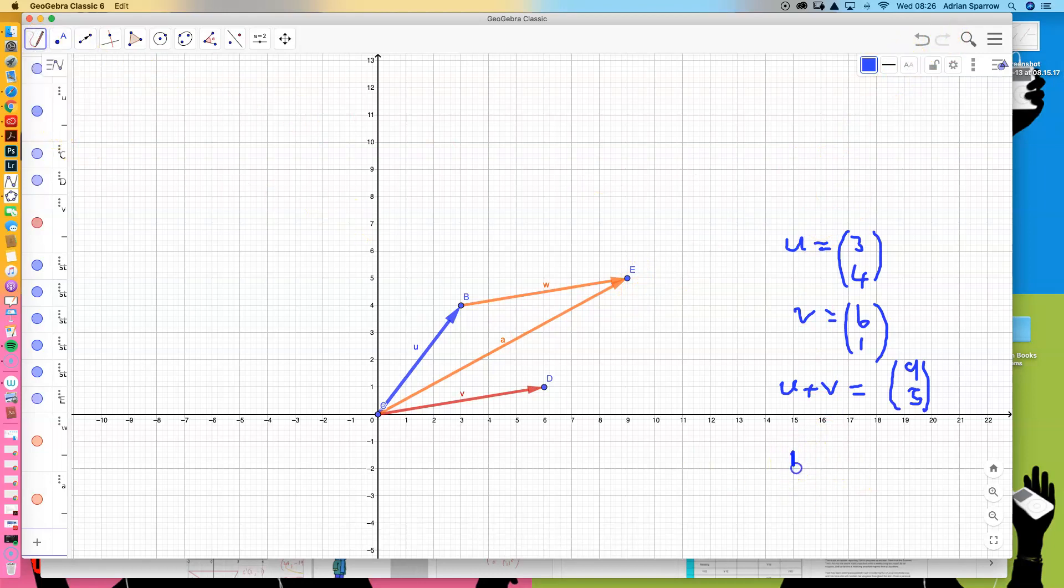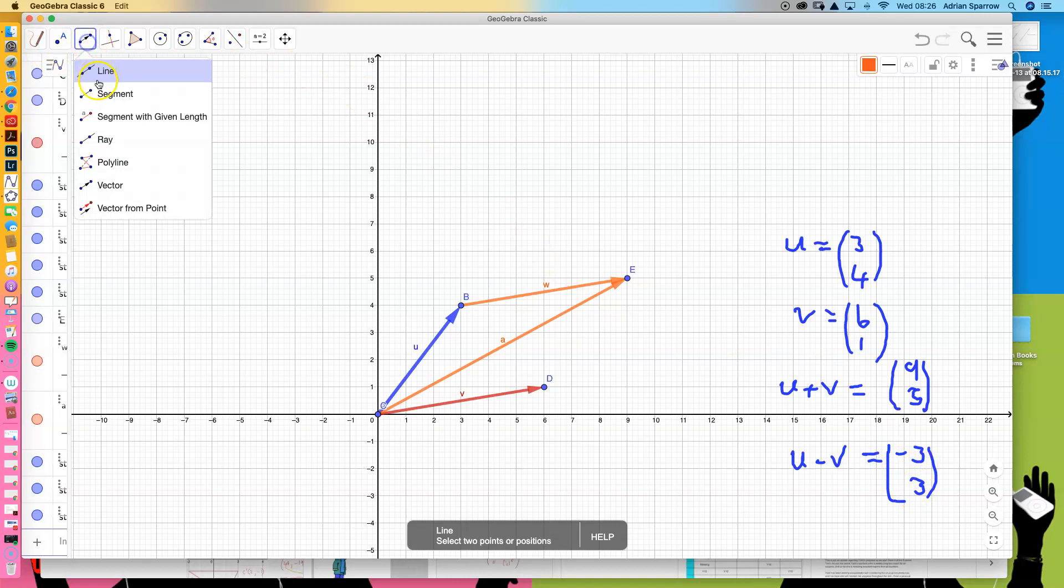If I did u take away v, we're going to end up with 3 take away 6, which is -3, and 4 take away 1, which is 3. So we get the vector (-3, 3). Let's draw that vector from the start point here.